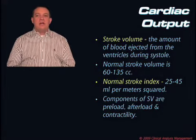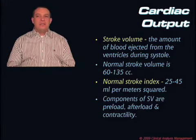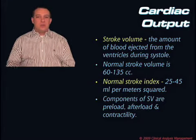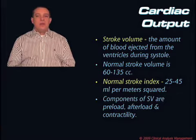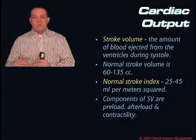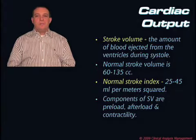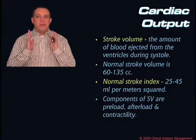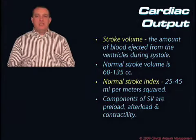When we talk about the normal stroke index, a normal stroke index is 25 to 45 milliliters per meter squared. All we've done with the stroke index is taken the stroke volume and put it into a formula based on the patient's body surface area to make it more specific for that patient.